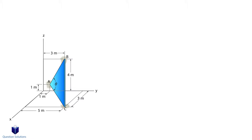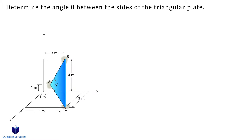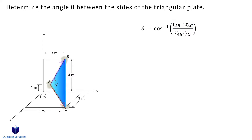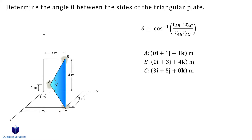Let's take a look at this question, where all we need to do is figure out the angle between the two sides of the triangular plate. We're going to do it using the dot product. So let's write down the equation to figure out an angle. We need two position vectors for the two sides of the triangle — one from A to B, and one from A to C. Let's write down the locations of points A, B, and C.